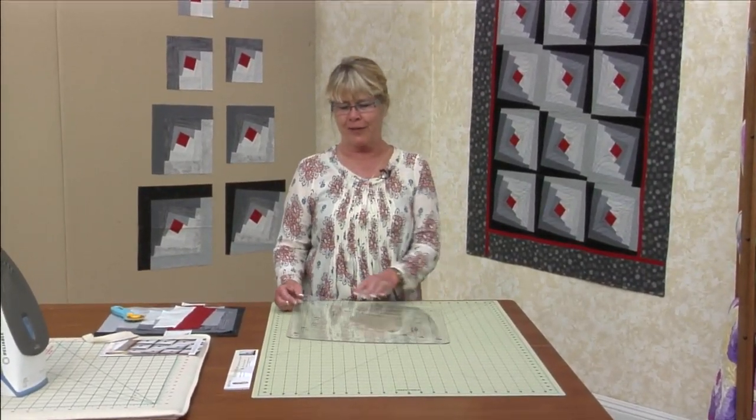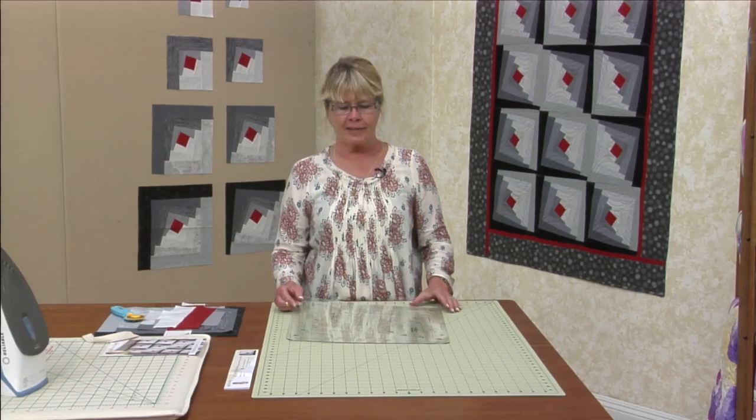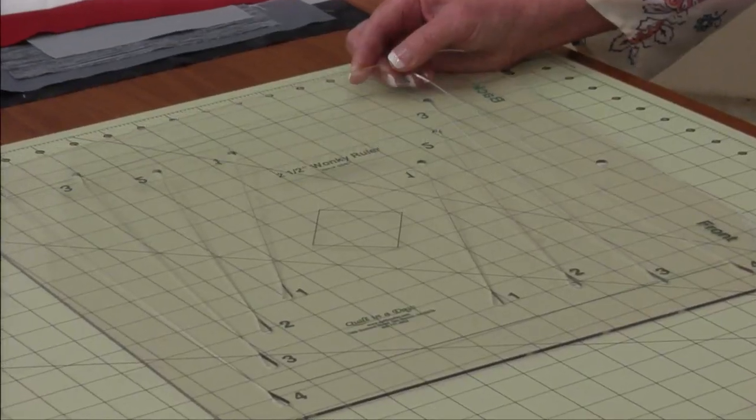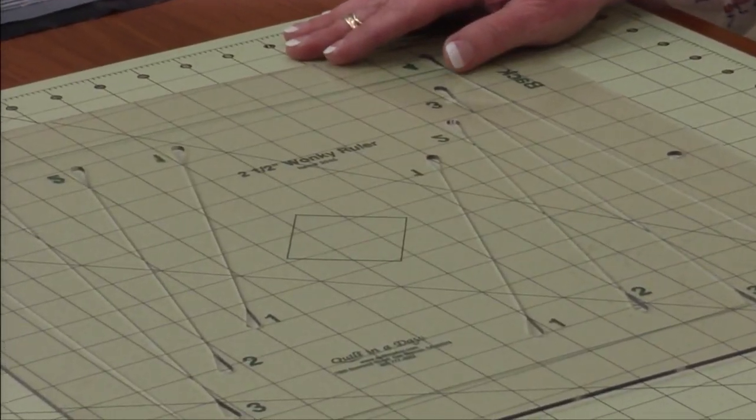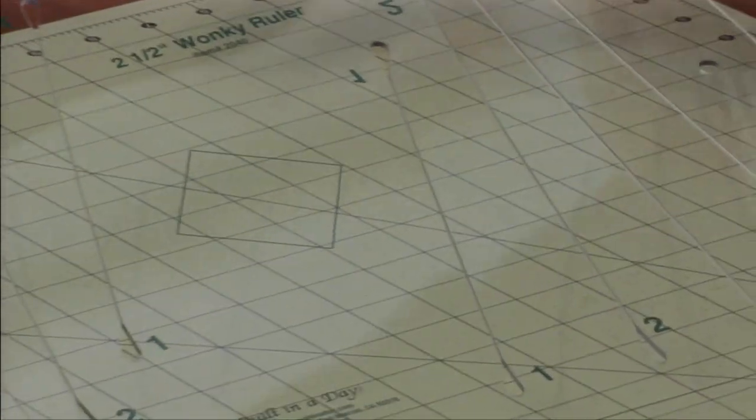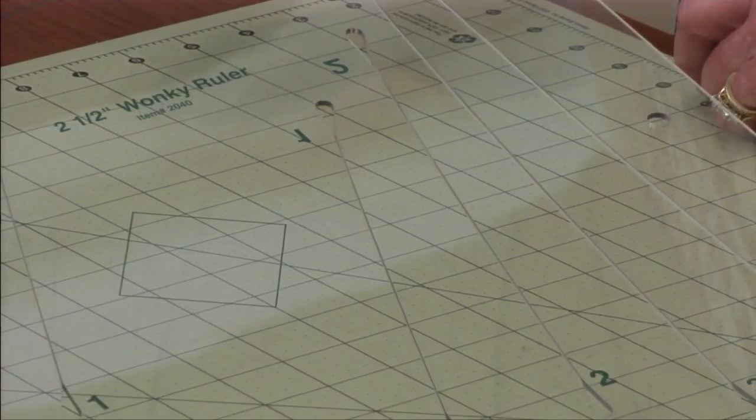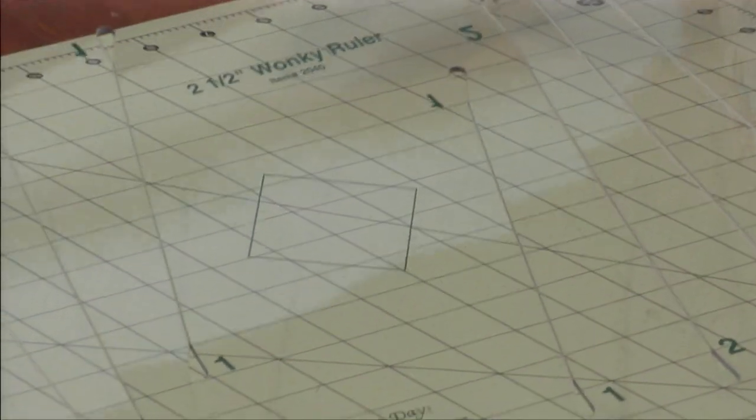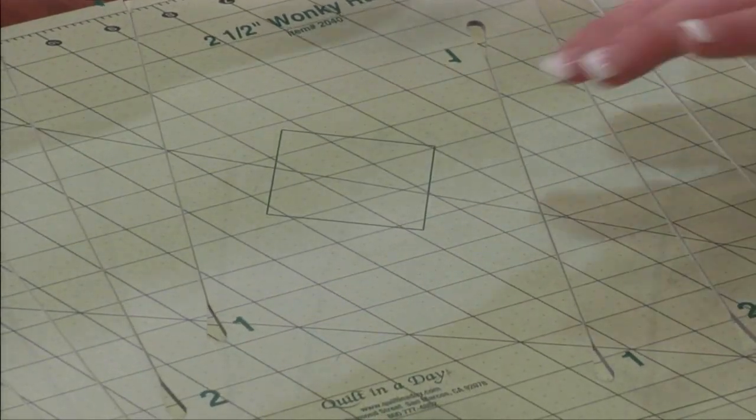I'm here to talk today about the two and a half inch wonky ruler. It's our brand new ruler that we use to give a little twist to our blocks. Now on the rulers there are several slots and they're numbered for the order. We have a two inch square that's pre-printed in the middle. We're going to be using that as a reference.